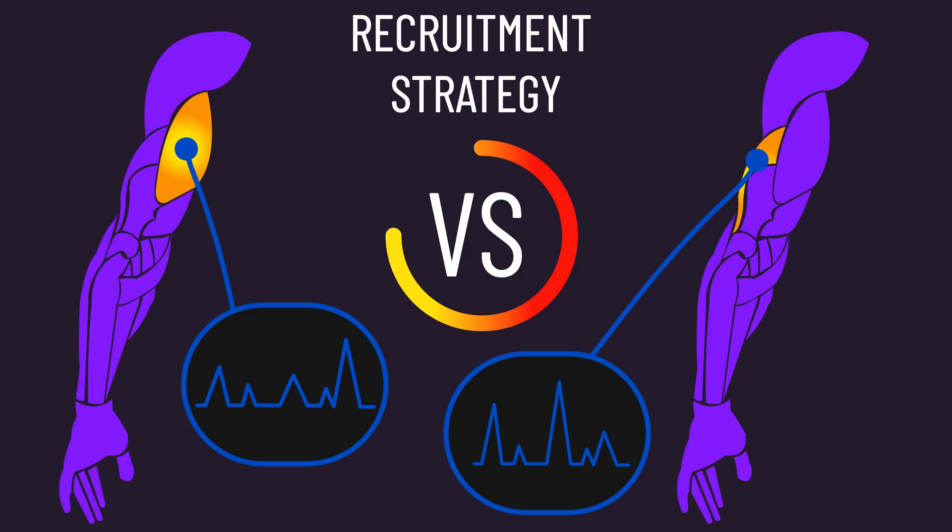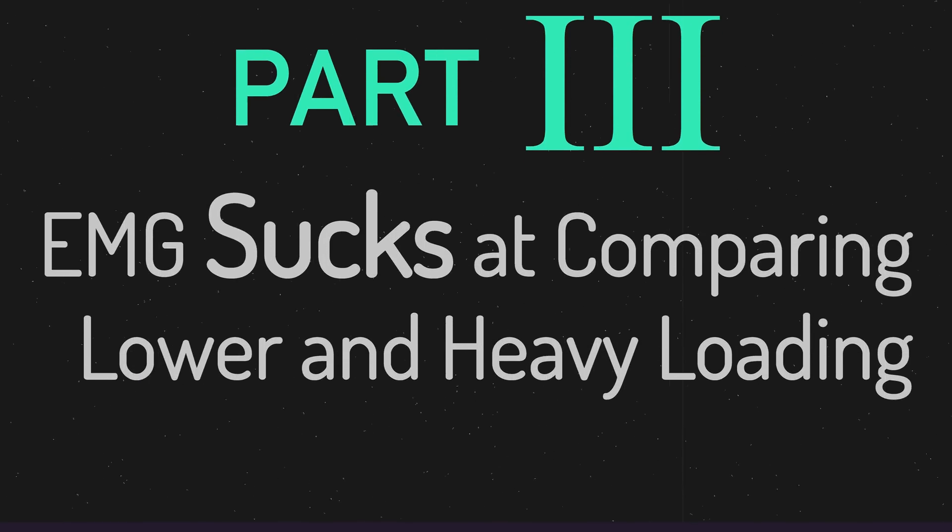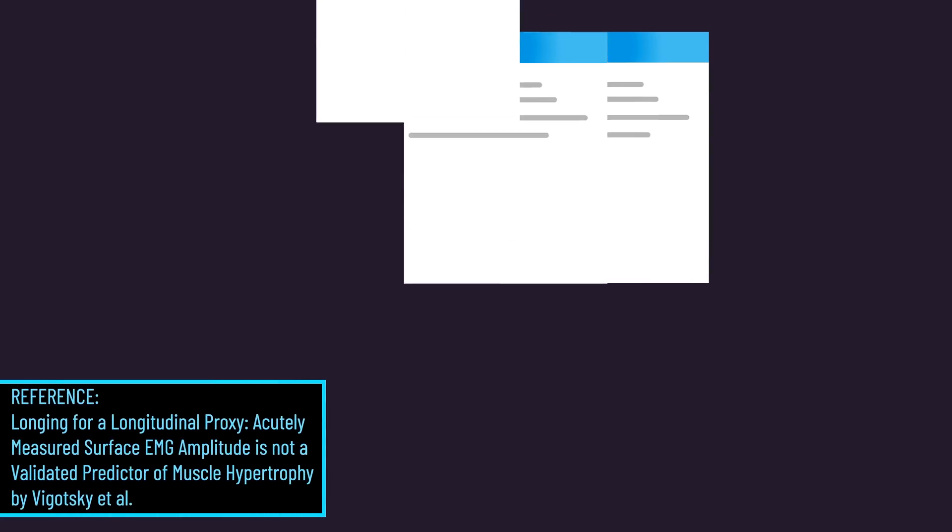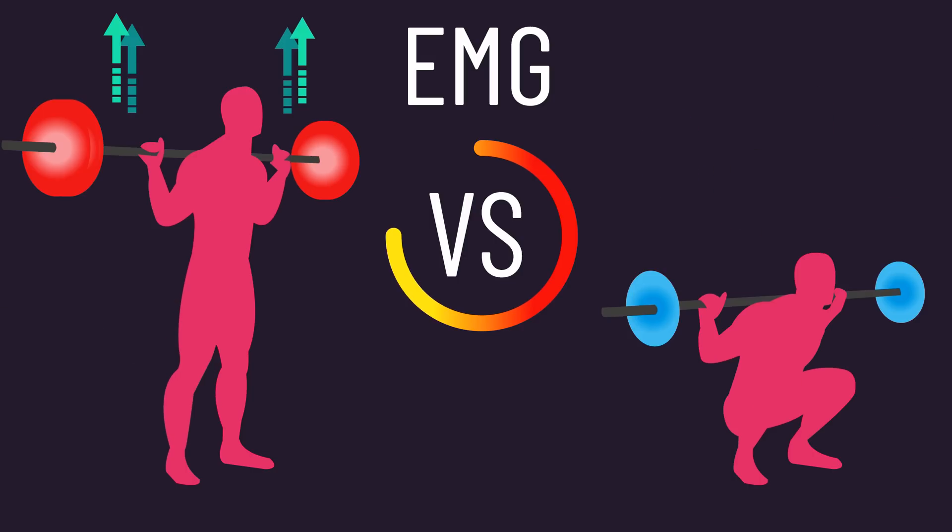Rather, the different EMG recordings could be down to recruitment strategies. In the scientific literature, EMG recordings are consistently higher when training with heavier loads versus lighter loads, even if repetitions are performed to failure in both situations.